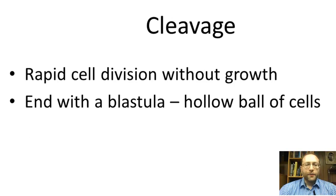Now we come to cleavage. Cleavage is rapid cell division without growth, and you end up with a structure called a blastula, which is a hollow ball of cells. We'll show this using models. We start with the fertilized egg, which is one of the few cells in the body that is actually visible — if you make a dot on a piece of paper with a pen as small as you can, that's about the size of the fertilized egg. Shortly after fertilization, the egg will divide in two, and the process for all these divisions is mitosis.